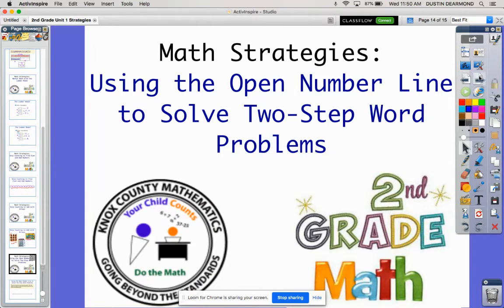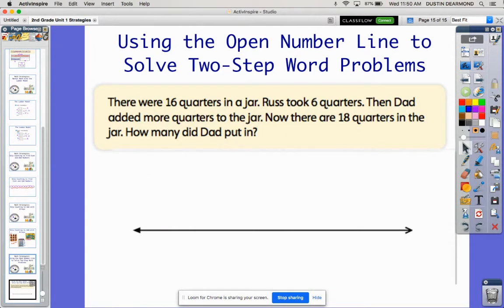So let's look at an example, and I'm going to use an open number line. Again, there are lots of strategies we can use to solve a two-step word problem. You could still use number bonds if you wanted, but I'm going to use the open number line because I think that's a great strategy, and we can all use it a little differently, but it works.